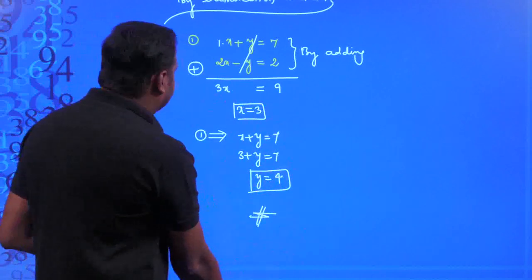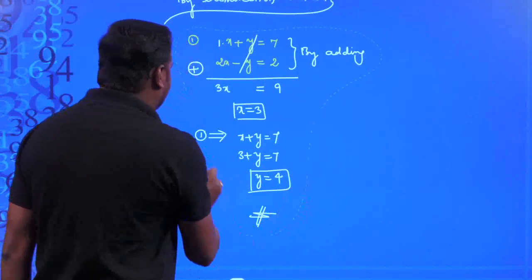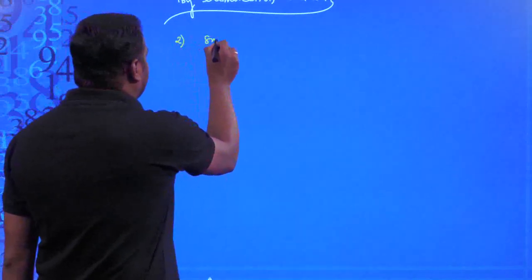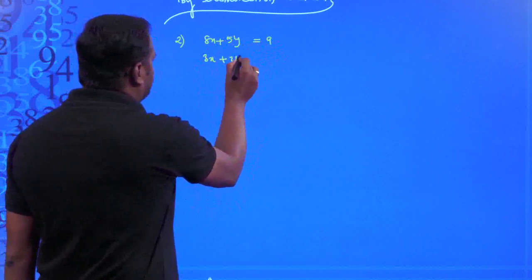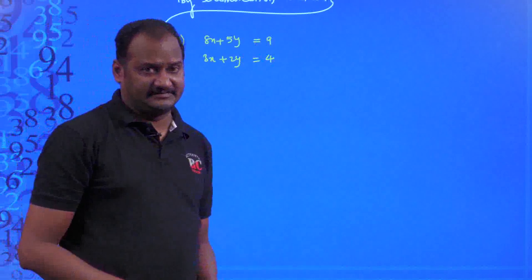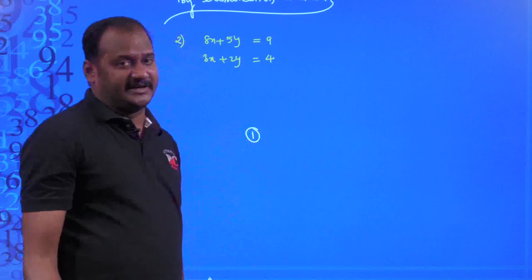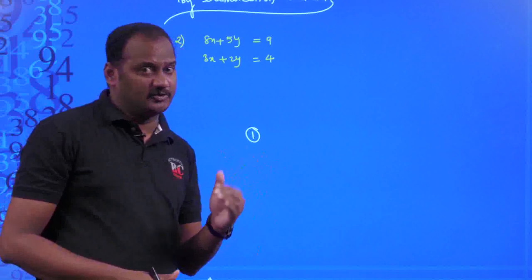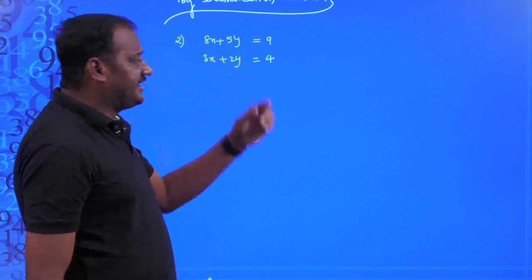Now let us take the same example used for substitution — 8x + 5y = 9 and 3x + 2y = 4 — and solve by elimination. The coefficients of x are 8 and 3 (not equal), and coefficients of y are 5 and 2 (also not equal). The y terms are not the same, so we need to make them equal.